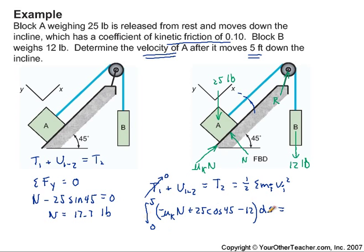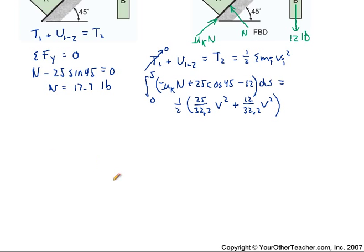And then on the right-hand side of the equation, we're going to set the total work done equal to the total kinetic energy at the second state of the system. So what we're going to have is 1 half times the sum of the mass of A times the velocity of A squared, plus the mass of B times the velocity of B squared. Now notice that because of the cable restraint, the speed of A is going to be exactly the same as the speed of B. So I can simply use the same V squared term here.